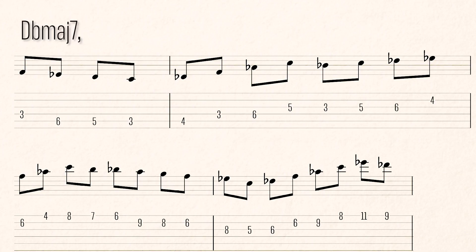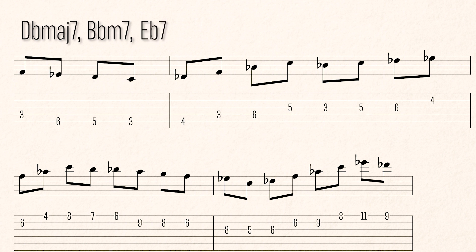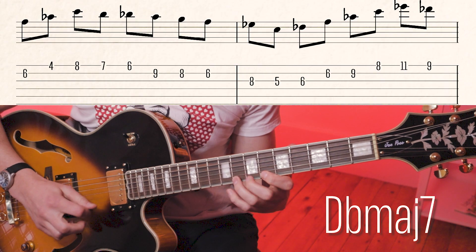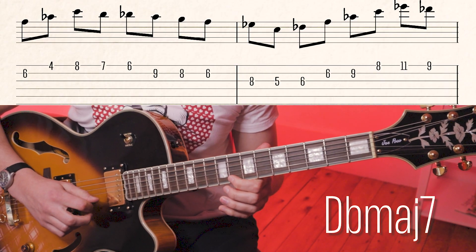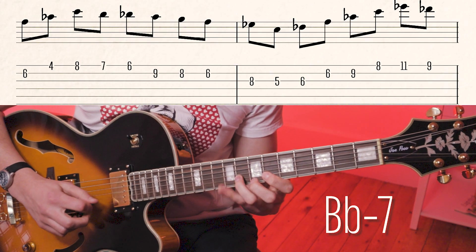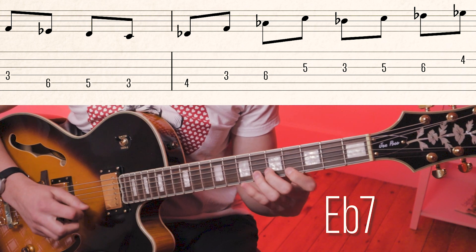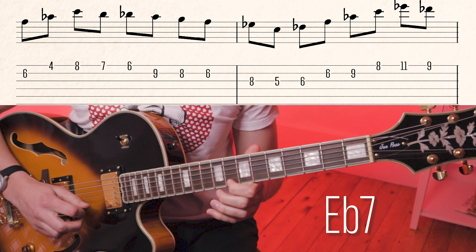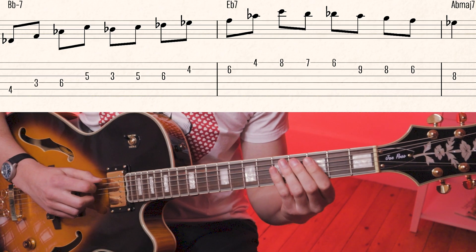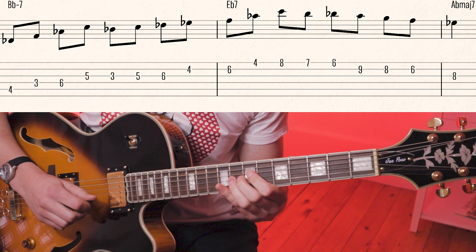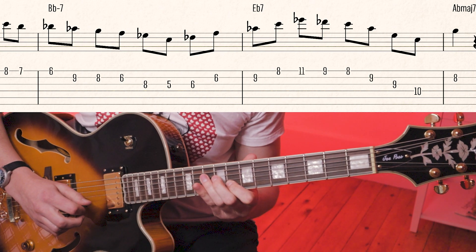But that's not all we can get out of this lick. Depending on how you hear things and your understanding of music theory, there are a lot of other places we can put this material. For instance, we can use all of the material in this section on a D-flat major 7 chord, a B-flat minor 7 chord, or an E-flat dominant 7 chord. We can also split up this section and use it as two separate 2-5-1s, or use those same two licks as minor 2-5-1s in F minor.